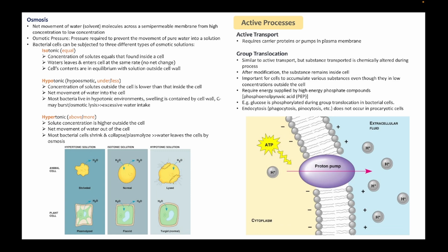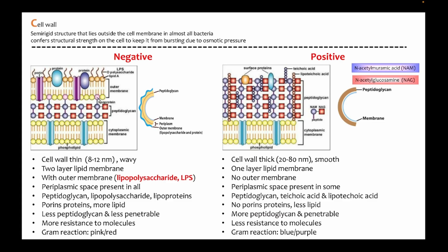For active processes, active transport and group translocation require energy. The most common example is the proton pump, where a proton gradient is formed through the work of the proton pump in order to generate ATP.